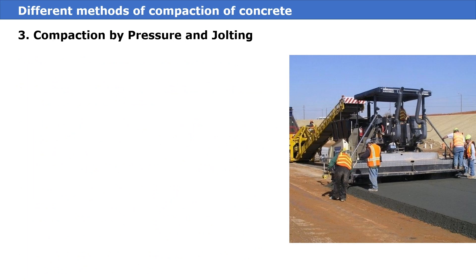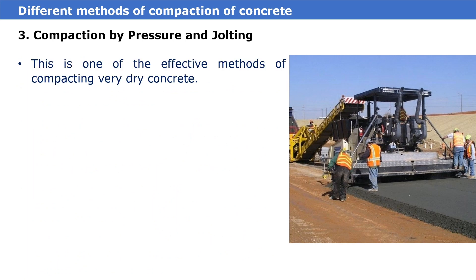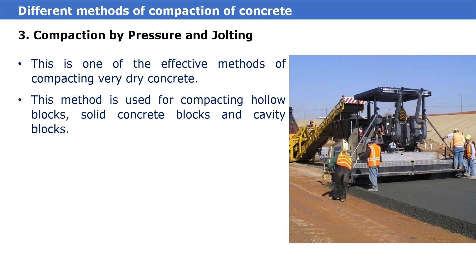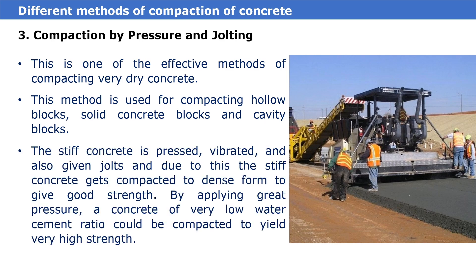The third type of compaction is compaction by pressure and jolting. This is one of the effective methods of compacting very dry concrete and is used for compacting hollow blocks, solid concrete blocks, and cavity blocks. The stiff concrete is pressed, vibrated, and also given a jolt, causing it to compact into a dense form. By applying great pressure, concrete of very low water-to-cement ratio can be compacted to yield very high strength.